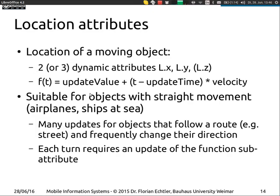Let's continue — now that we've heard about dynamic attributes in general, let's see how we can apply those to moving objects. That's actually quite straightforward: we just take the coordinates of the object x, y, and maybe z as dynamic attributes, and for a very straightforward function we model the time multiplied by the velocity of the object, which gives the travel distance since the last update. This works if you have an object which moves in a straight line — a ship on the ocean, an airplane.